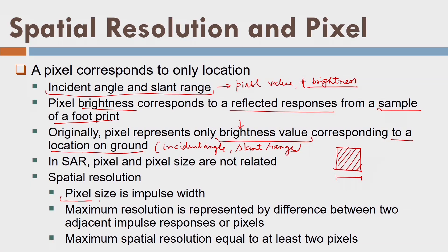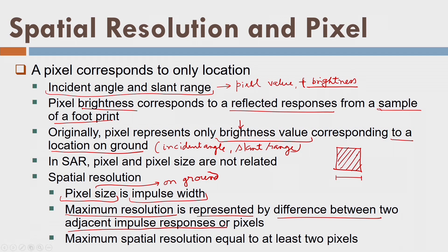All such information is collected into an array called a radar image. Pixel size on the ground is decided by the impulse width. Maximum resolution is represented by the difference between two adjacent impulse responses or pixels. The best spatial resolution should be equal to at least two pixels in the case of radar — that is the relationship.